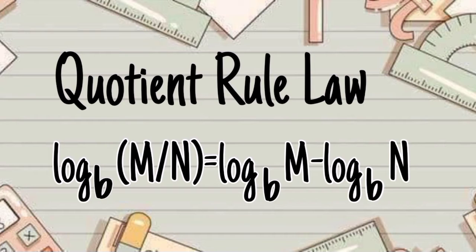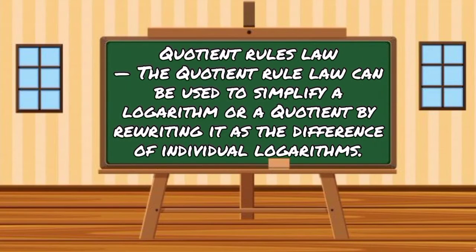Logarithm m over n with base b equals logarithm m with base b minus logarithm n with base b. A quotient rule law can be used to simplify a logarithm by rewriting it as a difference of individual logarithms.